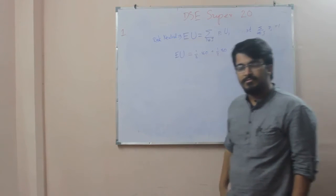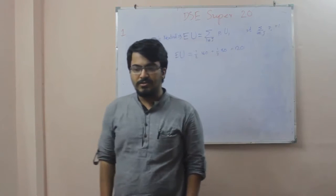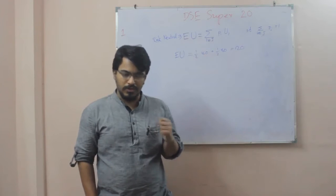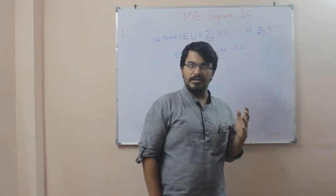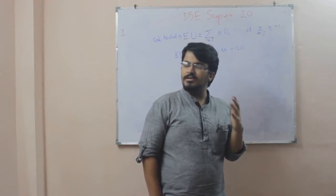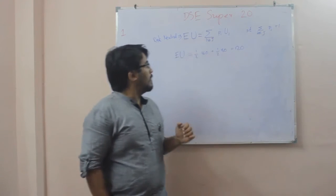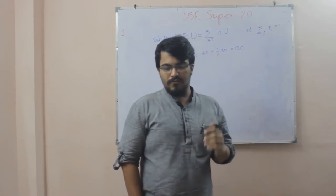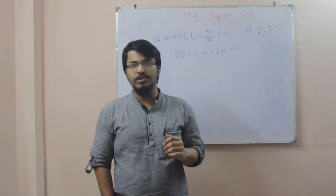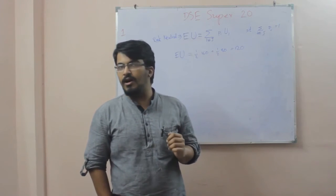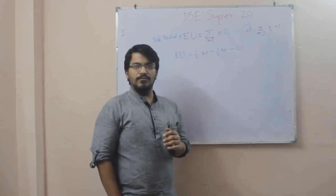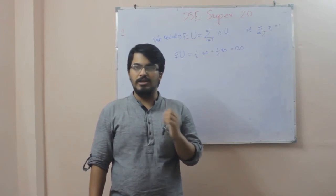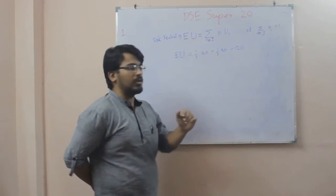You simply calculate the weighted average of the utilities you can obtain from the different states the world can possibly end up in. For example, in this case you have two different possible states: one where you get 80 rupees, or one where you get 160 rupees, each happening with probability half. A risk-neutral person would calculate the expected utility as 160 with probability half and 80 with probability half, giving an expected utility of 120 rupees.